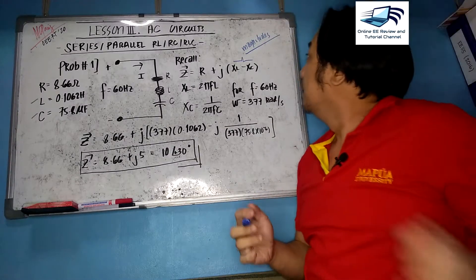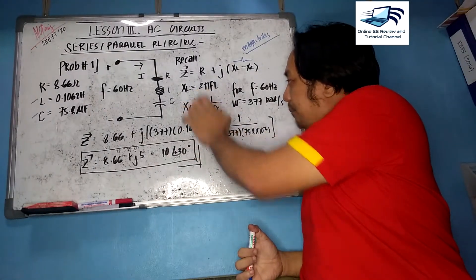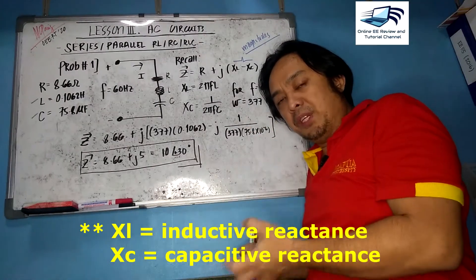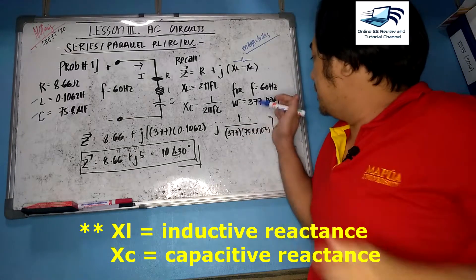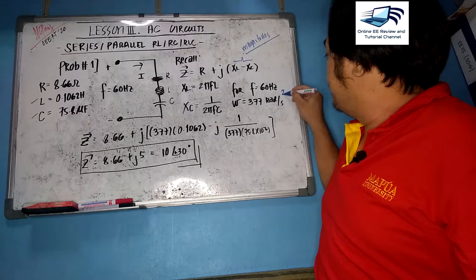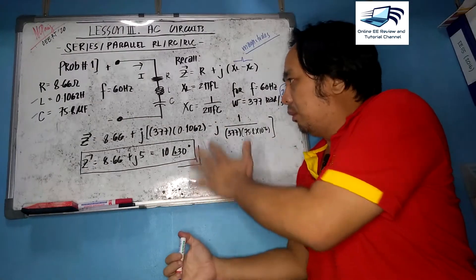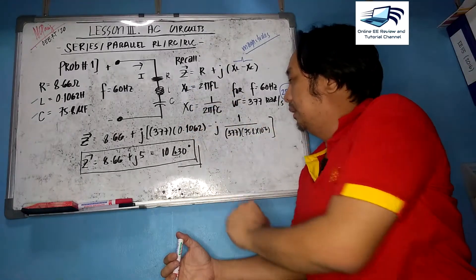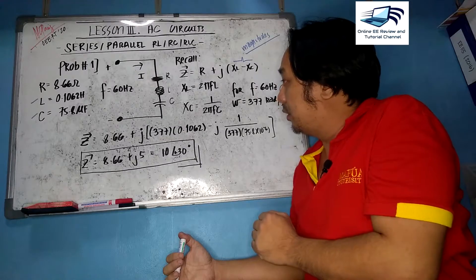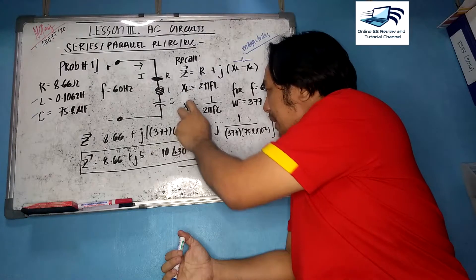XL equals 2πfL and XC equals 1 over 2πfC. For a frequency of 60 Hz, omega is 377 radians per second, since omega equals 2πf. Substitute all parameters to convert the frequency-domain values into ohmic conditions for inductive and capacitive reactance.